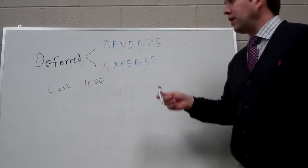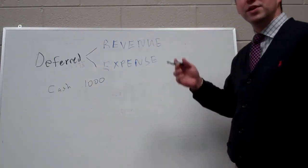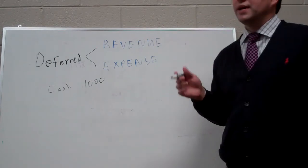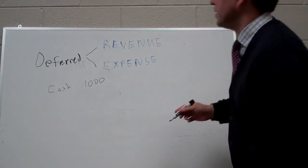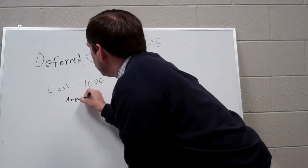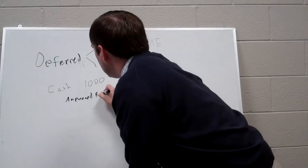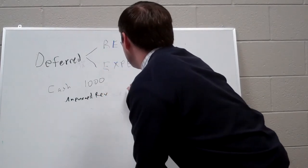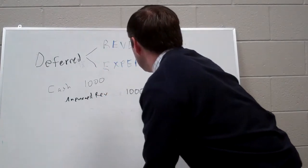But we can't record revenue because we haven't earned it yet. GAAP says no revenue until you actually do the job. So we have to record the special type of account, unearned revenue, and credit it for $1,000.